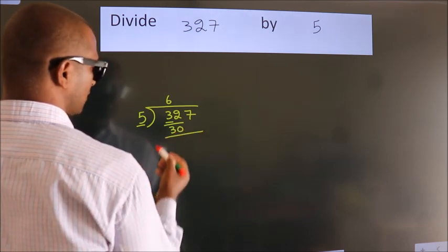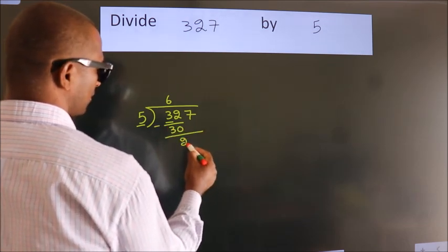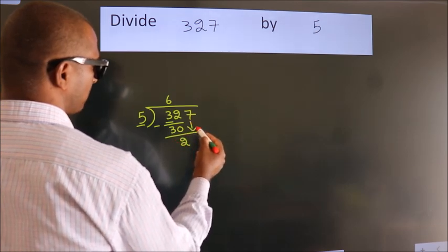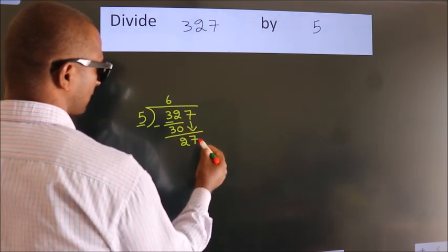Now we should subtract. We get 2. After this, bring down the beside number. So 7 down, giving us 27.